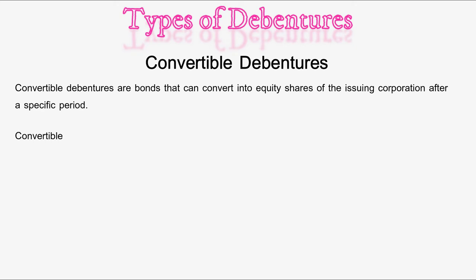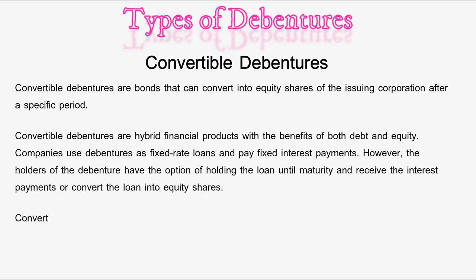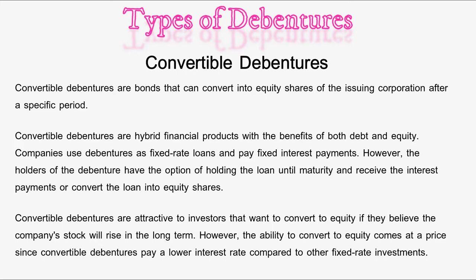Convertible debentures are bonds that can convert into equity shares of the issuing corporation after a specific period. They are hybrid financial products with the benefits of both debt and equity. Companies use debentures as fixed-rate loans and pay fixed interest payments. However, holders have the option of holding the loan until maturity and receiving the interest payments, or converting the loan into equity shares. Convertible debentures are attractive to investors who believe the company's stock will rise in the long term. However, the ability to convert to equity comes at a price, since convertible debentures pay a lower interest rate compared to other fixed-rate investments.